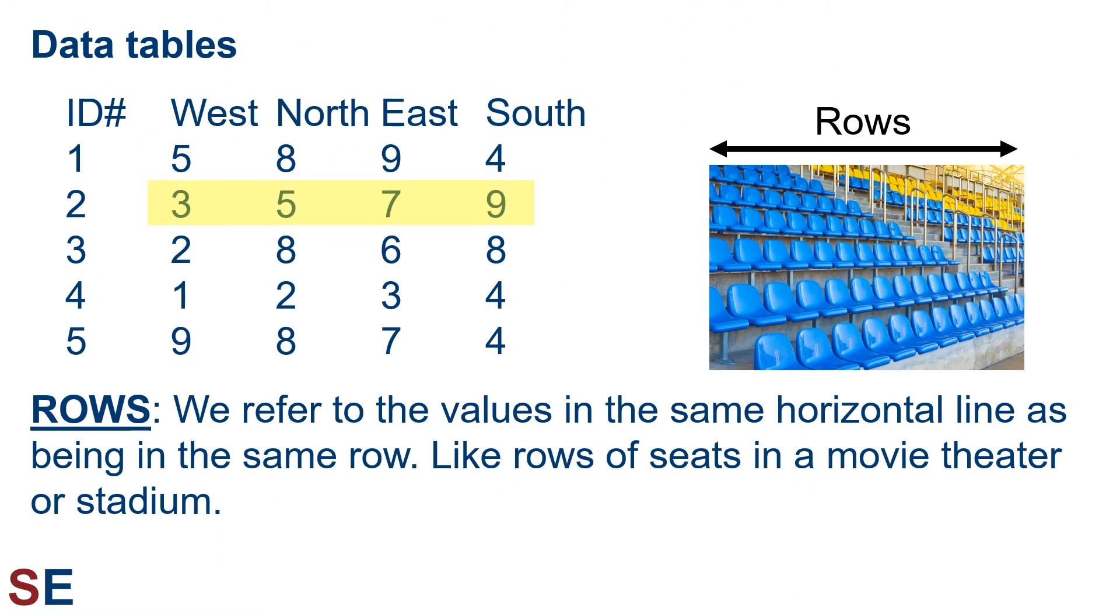We use the term rows to refer to the values in the same horizontal line. These values are in the same row, just like the rows of seats in the movie theater or stadium. The direction is side to side. For example, the values in the yellow box are all in the same row.